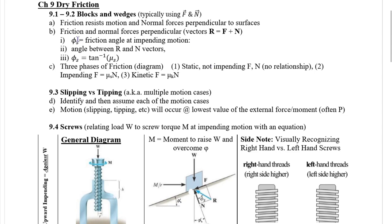For journal bearings, flexible belts, and screws we more often think in terms of a resultant force. We also use an angle called phi sub s — phi sub s is the friction angle at impending motion, and only at impending motion. It's the angle between the R and N vectors, and we can find that angle as equal to the inverse tangent of mu sub s.